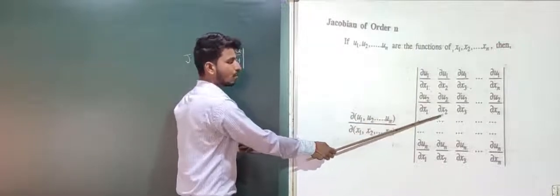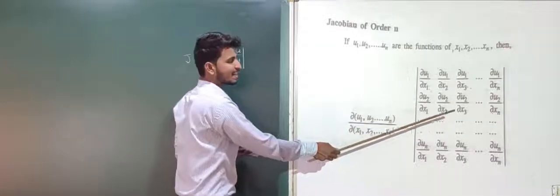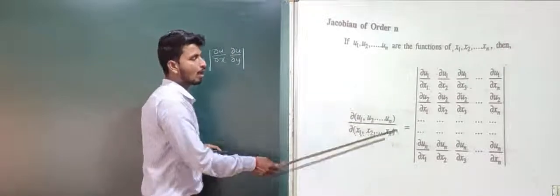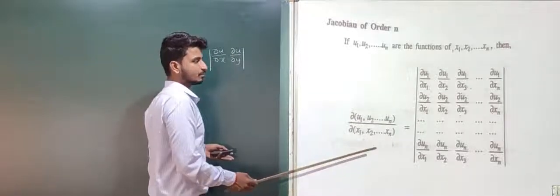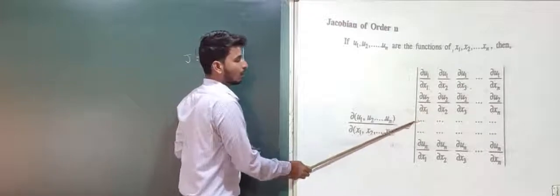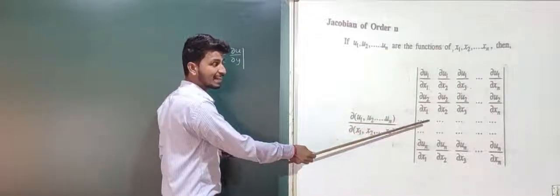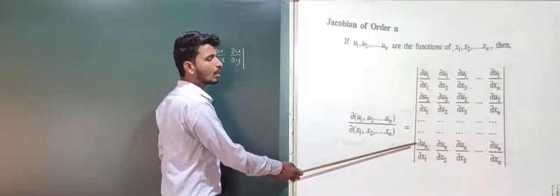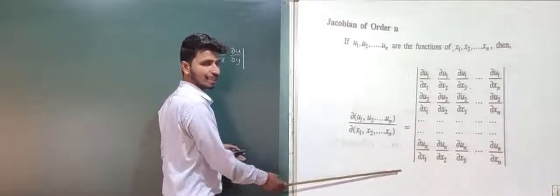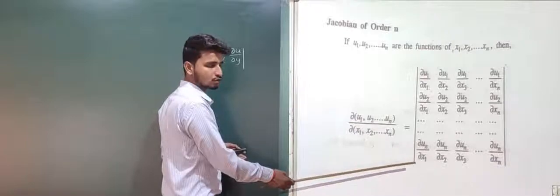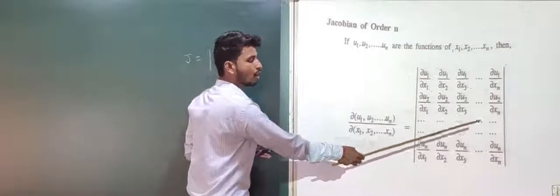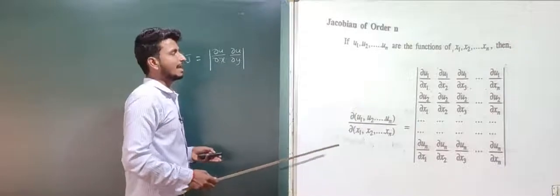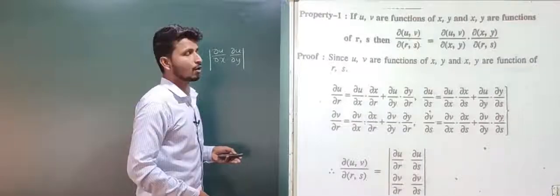The second row consists of ∂u₂/∂x₁, ∂u₂/∂x₂, ∂u₂/∂x₃, ..., ∂u₂/∂xₙ, and so on for each subsequent function up to uₙ. This is the Jacobian of order n.